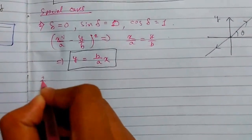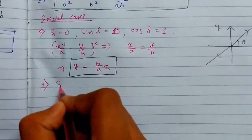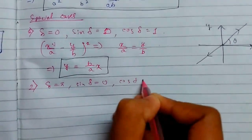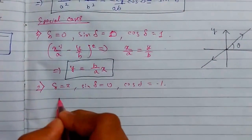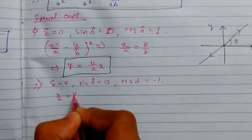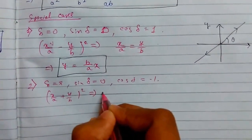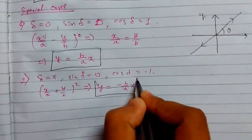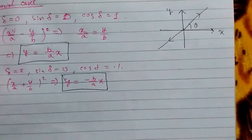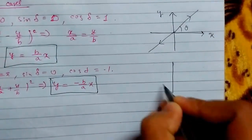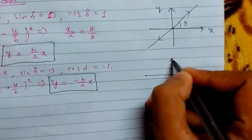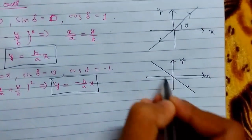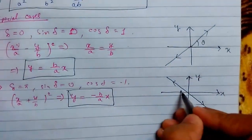Special case two: when δ equals π, sin(π) = 0 and cos(π) = −1. The equation turns out to be (x/a + y/b)² = 0, giving y equals −(b/a)x. The graph is a straight line through the origin with a negative slope.